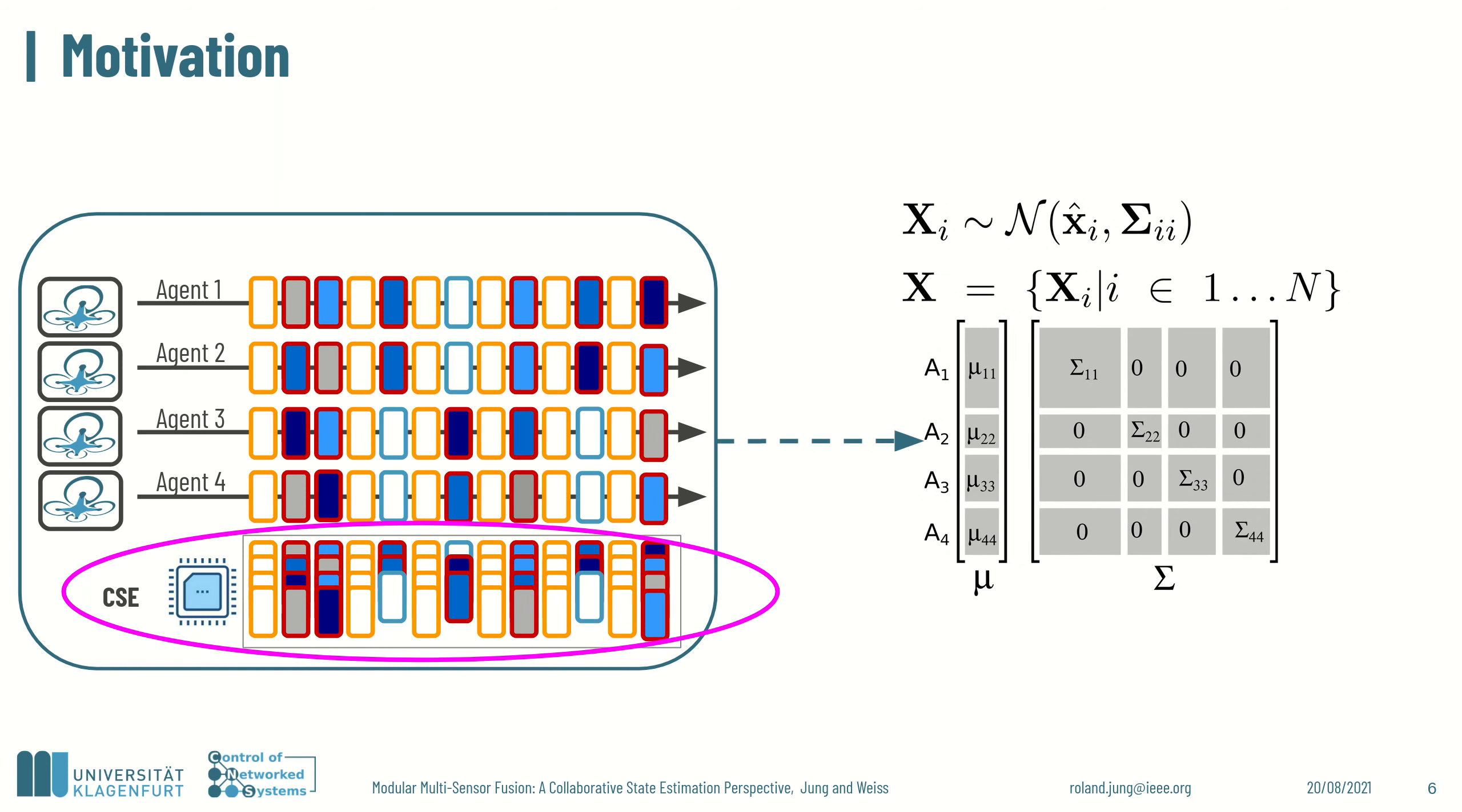Initially, agent states are independent shown by zero entries in the off-diagonal blocks of the joint covariance matrix. Joint observations lead to coupling and estimates become more and more directly or indirectly correlated. Covariances are positive semi-definite, thus the upper and lower diagonal triangular matrix contain the same information. Roumeliotis and Bekey proposed to factorize cross-covariances which allows each agent to perform state propagation distributed. Nonetheless, updates require the global state and a persistent all-to-all communication.